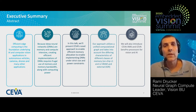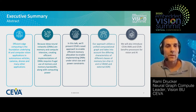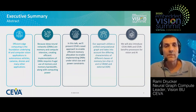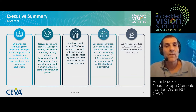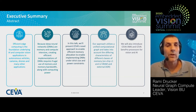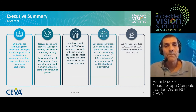Because deep neural networks are known to be memory and compute intensive, creating efficient implementations of DNNs requires a very effective and efficient use of memory and memory bandwidth, along with computing power. So these are the challenges we are going to address today.